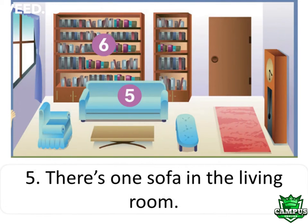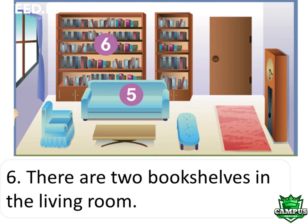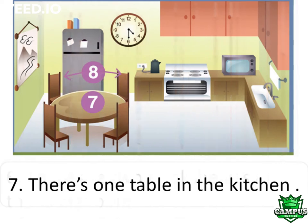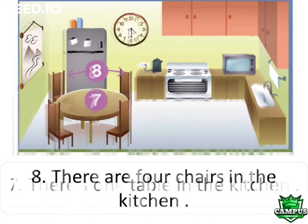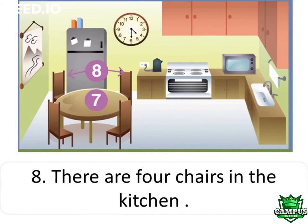5. There's one sofa in the living room. 6. There are two bookshelves in the living room. 7. There's one table in the kitchen. 8. There are four chairs in the kitchen.